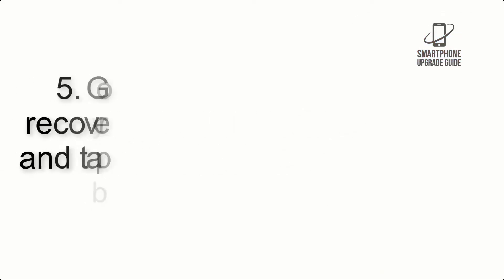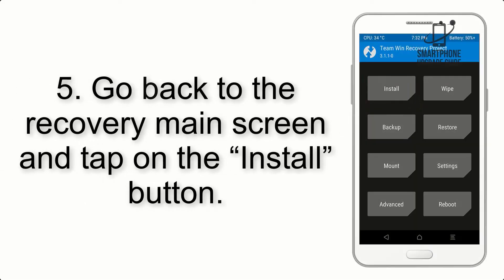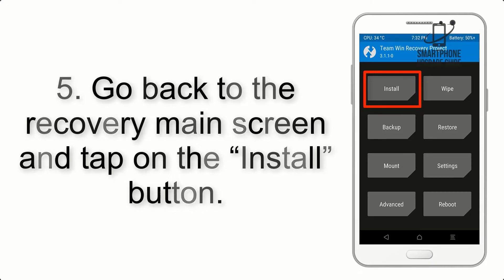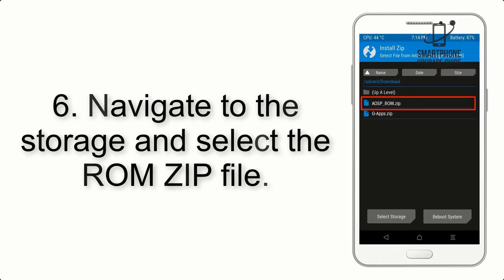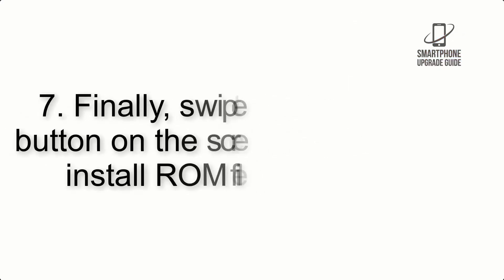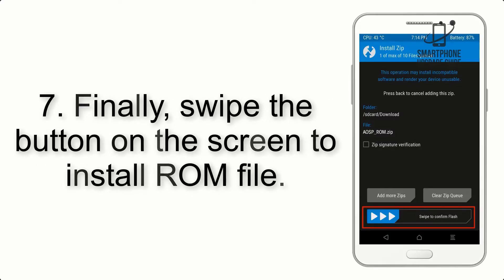Step 4: Swipe the button to wipe the device. Step 5: Go back to the recovery main screen and tap on the Install button. Step 6: Navigate to the storage and select the ROM zip file.